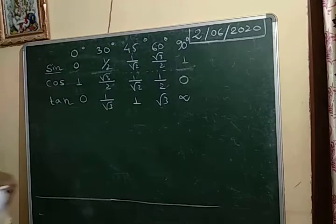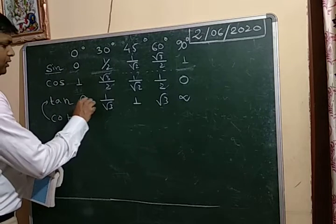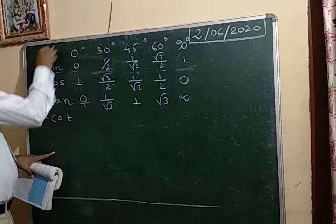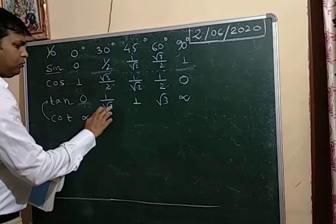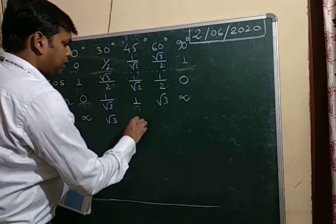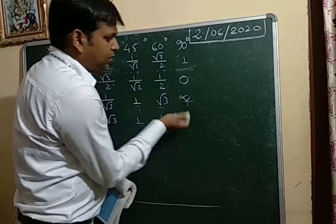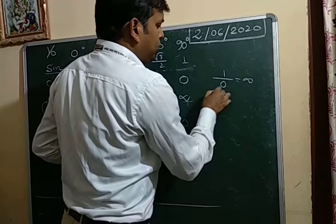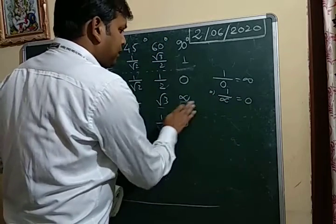After getting these three rows, the other three can be found very easily. Now cot: cot is the reciprocal of tan. Cot 0° is 1 by 0, which is undefined. Cot 30° is reciprocal of 1/√3, which is √3. Cot 45° is reciprocal of 1, which is 1. Cot 60° is reciprocal of √3, which is 1/√3. And cot 90° — if we reciprocal infinity, we get 0, because 1 by infinity equals 0.